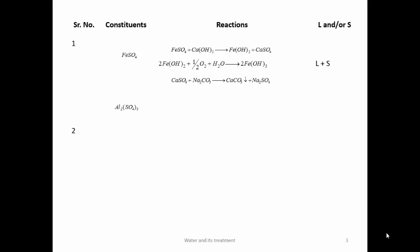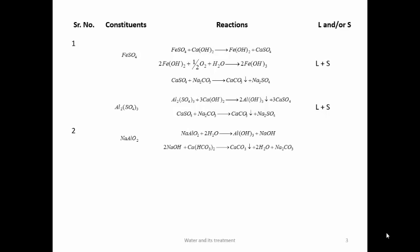Aluminium sulphate — Al is converted to Al(OH)₃ precipitate by adding Ca(OH)₂, which also forms CaSO₄; CaSO₄ treated with soda gives CaCO₃; total L + S. Sodium aluminate (NaAlO₂) — reacts with water to give Al(OH)₃ precipitate and NaOH; NaOH reacts with Ca(HCO₃)₂ giving CaCO₃ and Na₂CO₃. Soda is produced (−S) and NaOH consumes one molecule of Ca(HCO₃)₂ that would have required lime, so it is −L and −S.